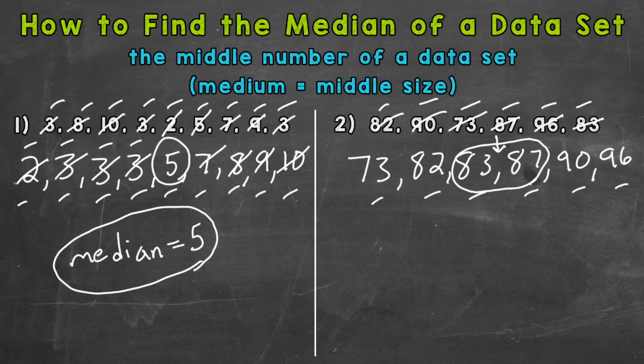So in order to find the average, we need to add our two numbers up. So 83 plus 87. And that gives us an answer of 170. Once you add them up, you need to divide by however many numbers you added up. And we added two numbers up. So we need to divide by two in order to find the average. So 170 divided by two is 85.